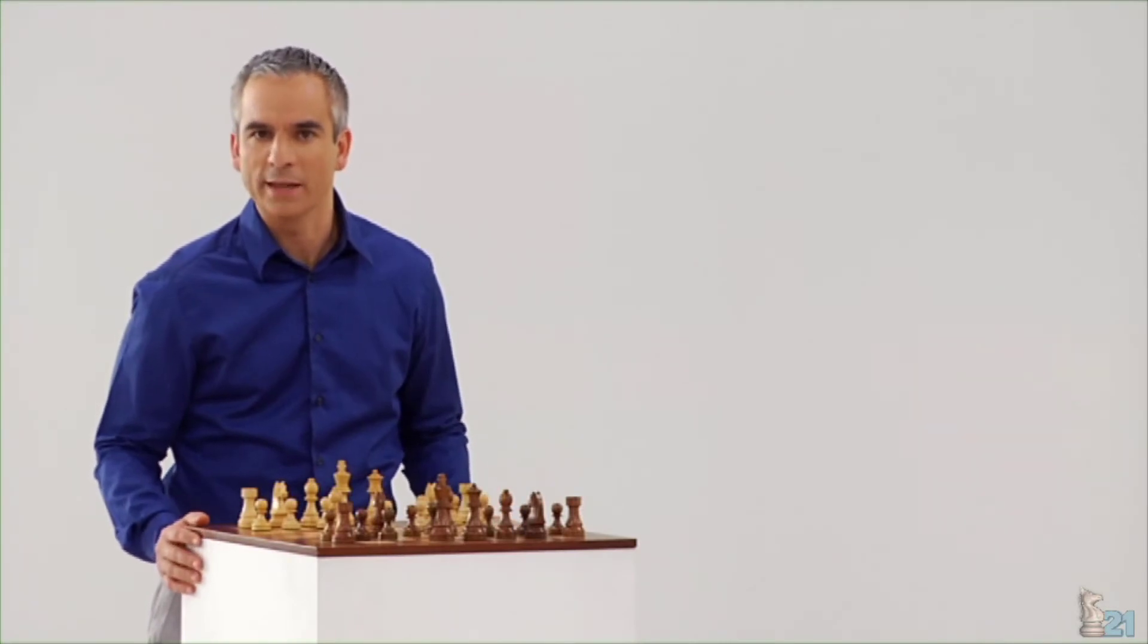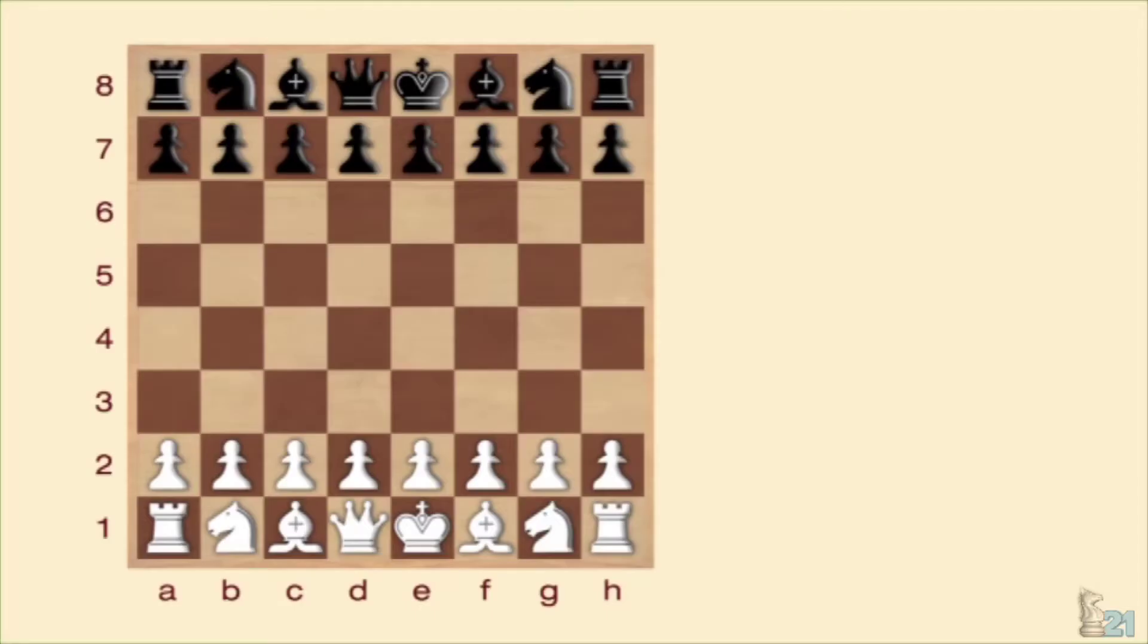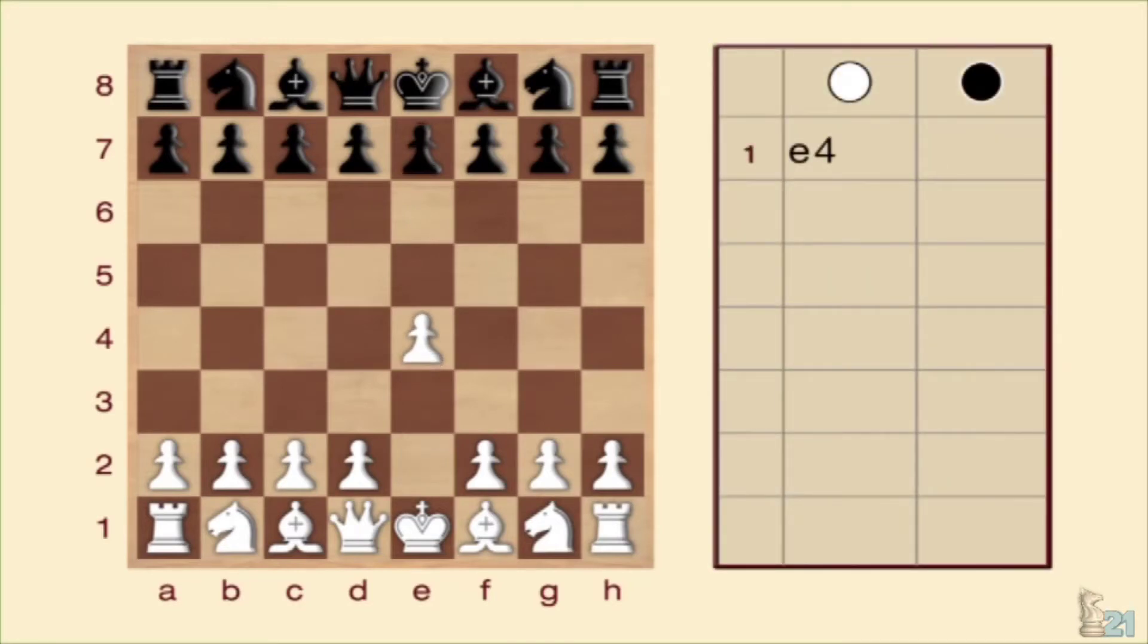Una vez aprendido lo que es un jaque doble, vamos a ver algunos casos prácticos. Comenzamos con un ejemplo de horquilla en plena apertura. Prestad atención. Tras una defensa francesa, las negras desarrollan un caballo y un alfil.